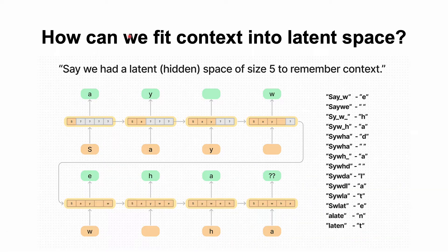Here's an example that I found in a really great Medium article explaining Mamba. How can we fit context into latent space? So imagine if we used characters to represent the hidden space instead of numbers in here, this example. And the sentence is, say we had a latent or hidden space of size 5 to remember context. It's hard enough to fit context into latent space to do anything rather than remember the last couple of characters within our sentence as we go along.